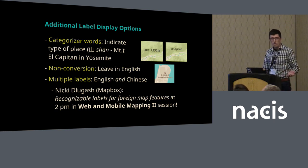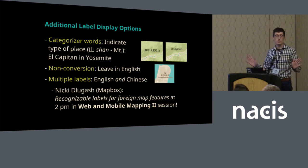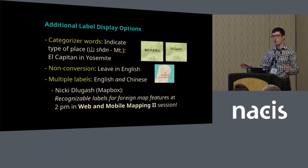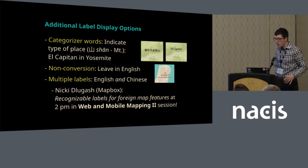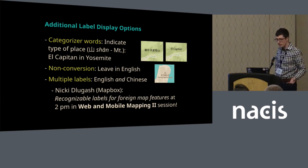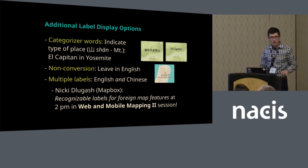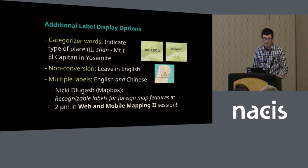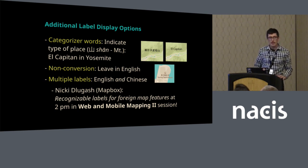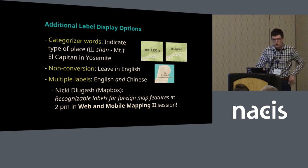We could also leave the label in English — maybe that's what speakers prefer. Maybe they don't even want us to try; they just want to know what people in the place call it and go with that. Another possibility is showing multiple labels, showing English and Chinese. That's not something I surveyed, but my colleague Nikki is actually presenting a talk on that today at 2.